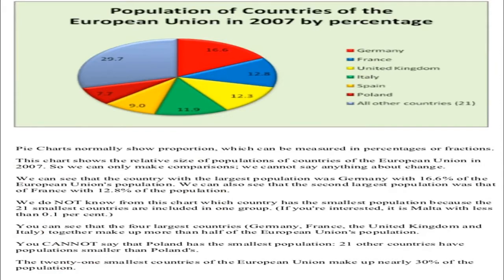However, look at this pie chart. This chart is about the population of countries of the European Union in 2007 by percentage. This red portion indicates Germany at 16.6%. This blue portion indicates France at 12.8%. This yellow portion indicates the United Kingdom, and this orange portion indicates Italy.